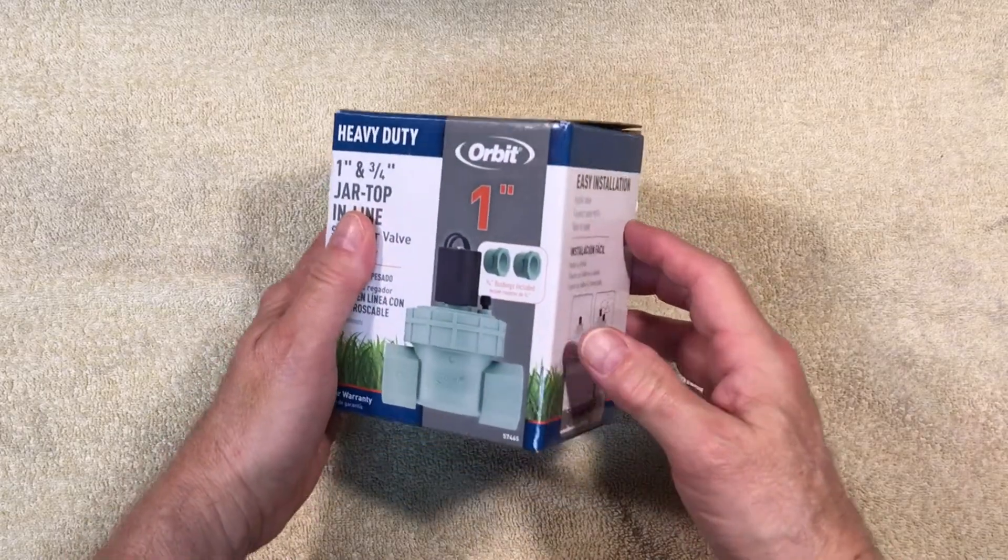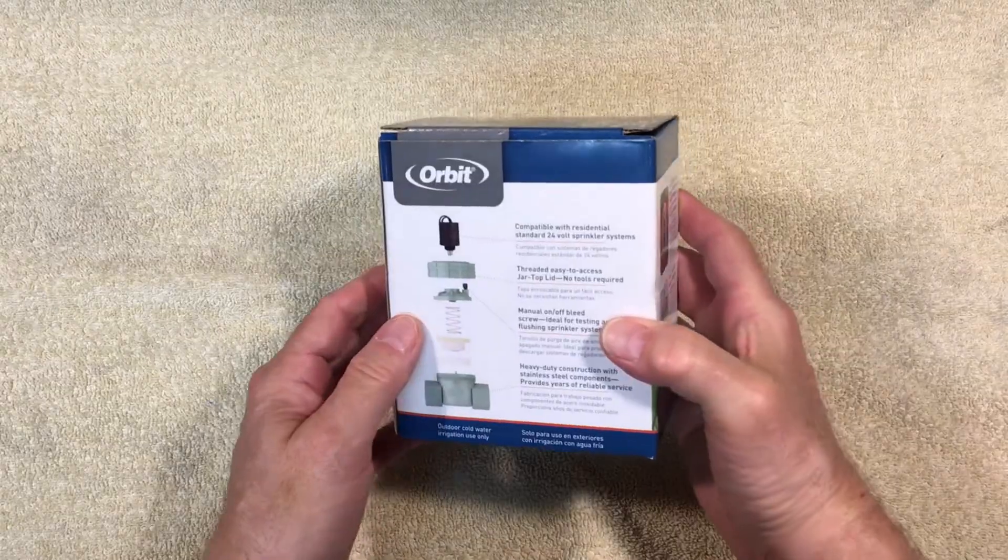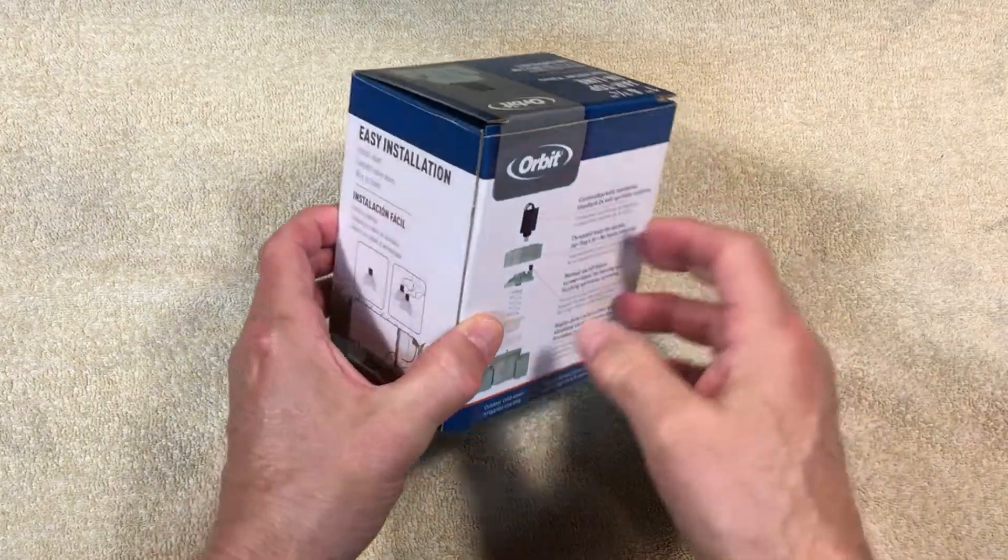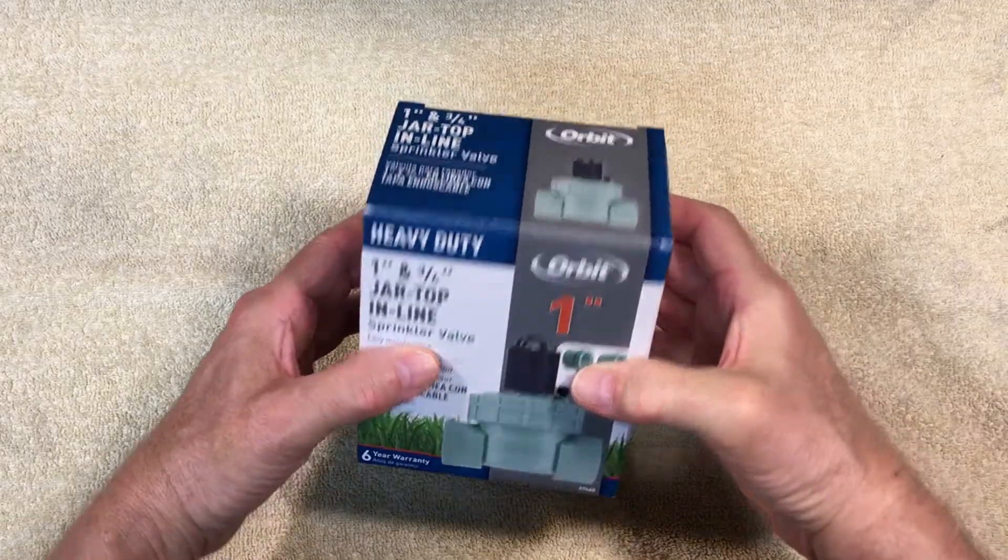I could not find a video on YouTube explaining exactly how an Orbit sprinkler jar-top valve worked. It's a simple looking device, but the way it actually operates is real genius.